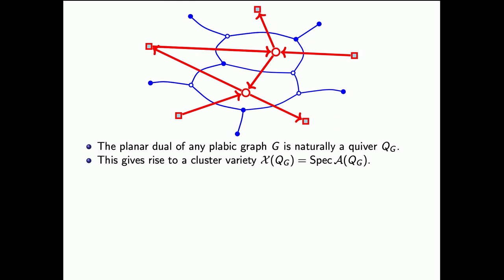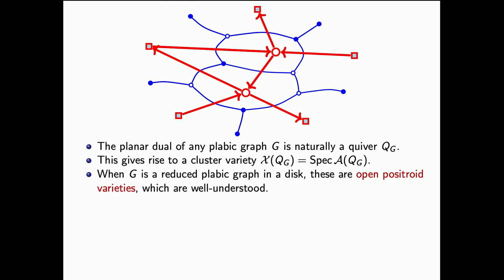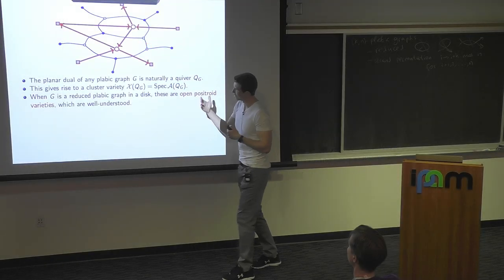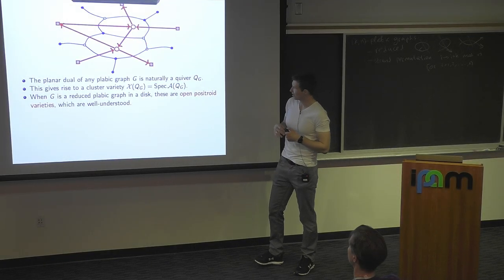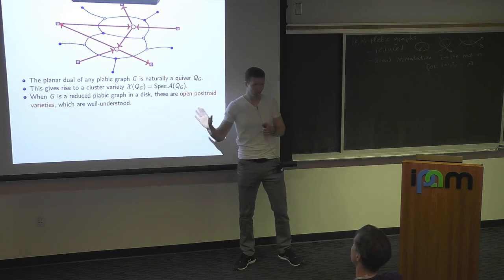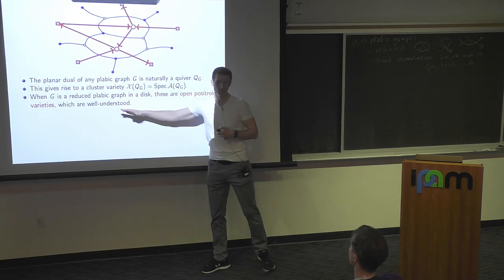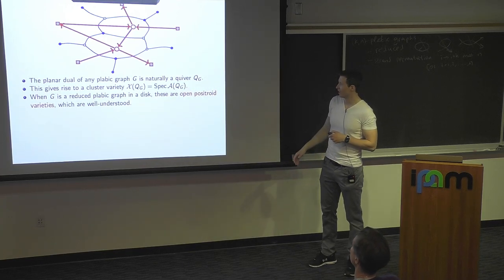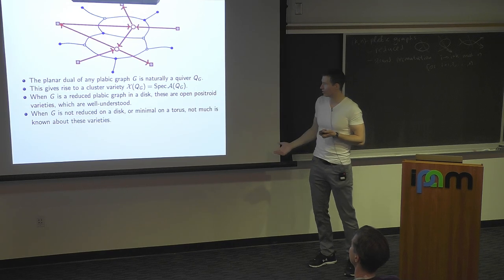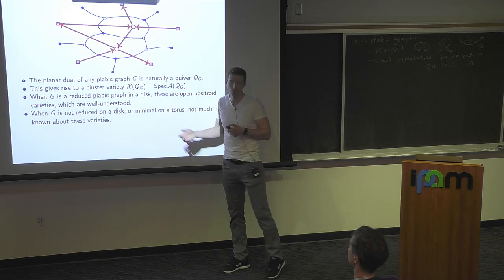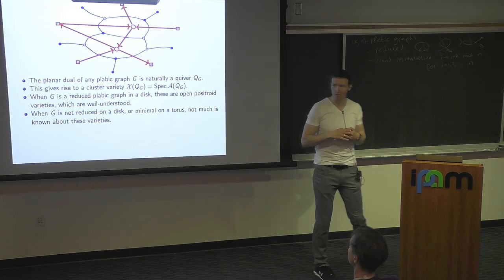This works for any surface, any reduced or non-reduced graph. Outside of the reduced case, nobody has studied these objects, I think. Even on the torus, I don't know if anybody knows what the cluster variety is. But for reduced plebik graphs, you get a relatively nice variety — what's called open positroid varieties, which are at least somewhat understood. For non-reduced graphs on the torus, it's an open problem — one of you should solve it.